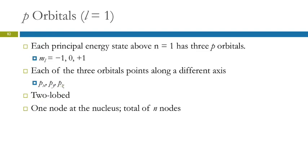These p orbitals have two lobes with a node at the nucleus, and a total number of nodes equal to their principal energy level.